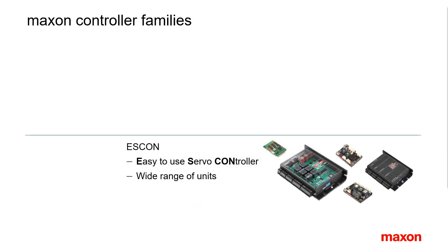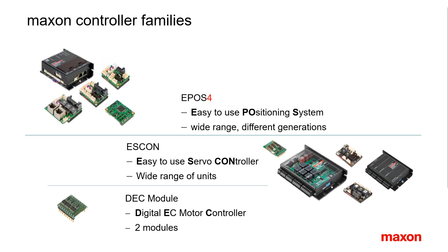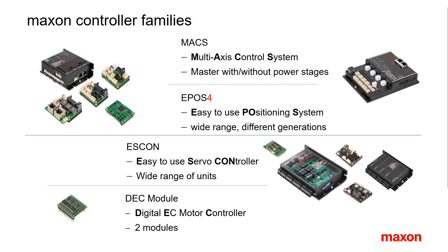Let me first give a very general overview of the Maxon controller families. The ESCON family is the first choice when it comes to dynamic speed control with analog set value. Cost-effective electronic commutation of brushless motors and simple speed control can be achieved with the DEC modules. The members of the EPOS family are the standard positioning or motion controllers which support standard bus communication. The MAX products are multi-axis master systems with or without integrated power stage, serving for the synchronization of dynamic multi-axis applications.